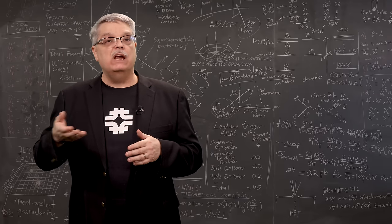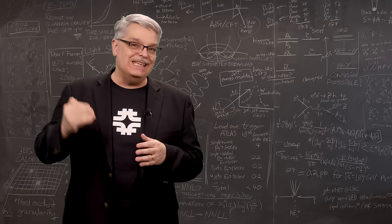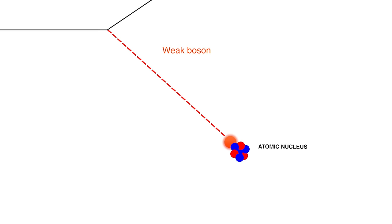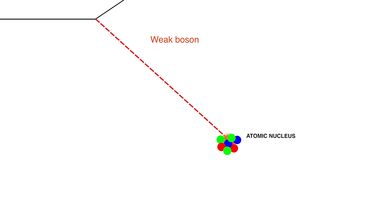However, on the extremely rare occasion in which there actually is an interaction, the weak boson just jumps out, smashes into the subatomic particle in the center of the nucleus of the atom and breaks the nucleus apart. That's the easy part.